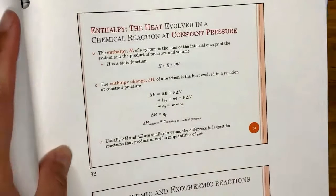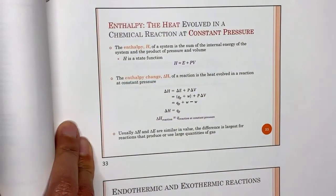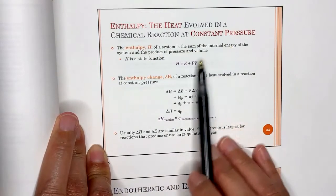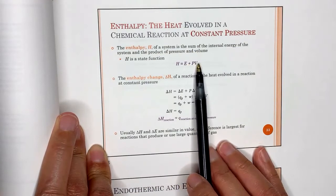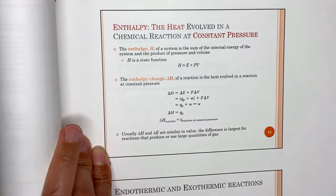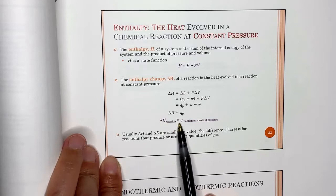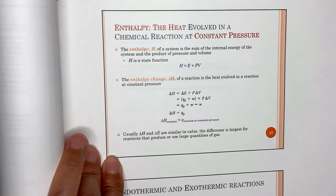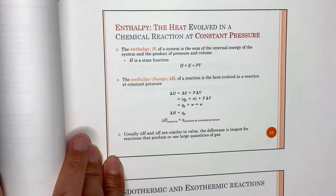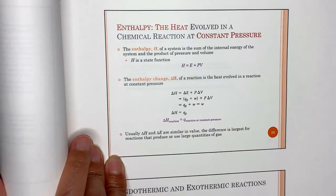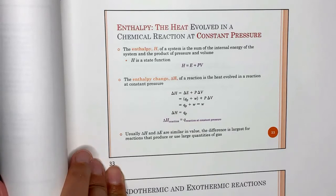Enthalpy H is the sum of internal energy and the product of pressure and volume: H = E + PV. It's also a state function. At constant pressure, delta H = delta E + P·delta V, and since w = −P·delta V, delta H equals q at constant pressure. So Q represents delta E at constant volume (bomb calorimeter) and delta H at constant pressure.